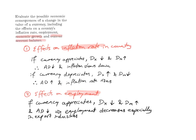First, let's look at the effects on inflation. If the currency appreciates — if its value goes up — foreign demand for exports will decrease, and domestic demand for imports will increase because local residents can now buy more imports. This leads to a fall in aggregate demand and could lead to a slowing down of inflation.